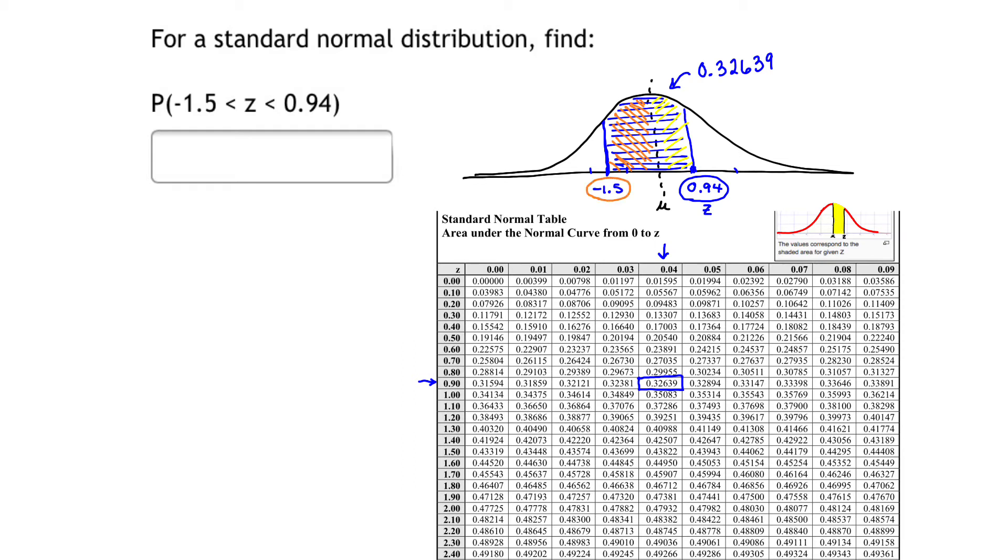Our table doesn't have negative values, but that's okay. We're going to find it as if it was a positive number because of the symmetry on both sides of our mean. We'll look for z = 1.5 because the area on the right side and the left side of the mean would be the same.